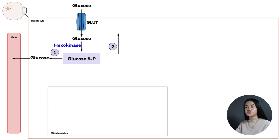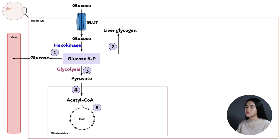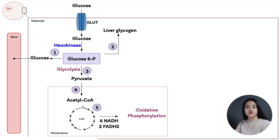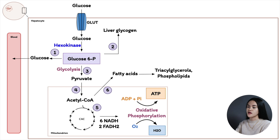The second pathway: if there is excess energy or excess glucose, glucose-6-phosphate can be converted to liver glycogen, a polymer of glucose, in a pathway called glycogenesis. The third pathway is glycolysis — the oxidation of glucose to produce two molecules of pyruvate. Pyruvate can then be oxidized to acetyl-CoA by the pyruvate dehydrogenase complex. Acetyl-CoA can enter the citric acid cycle to yield energy and form ATP. The electrons generated are transferred to the electron transport chain to drive ATP synthesis via oxidative phosphorylation. Acetyl-CoA can also be used as starting material for fatty acid synthesis, leading to triacylglycerols for storage and phospholipids.